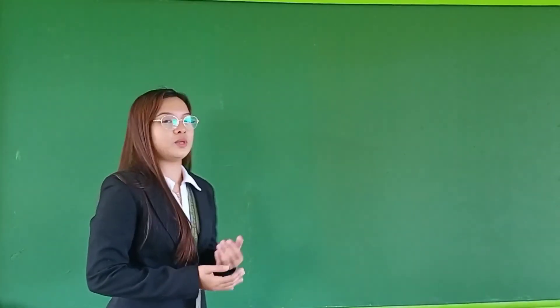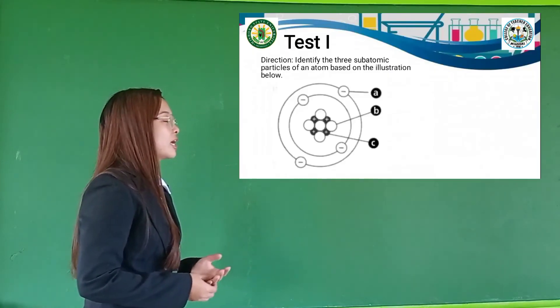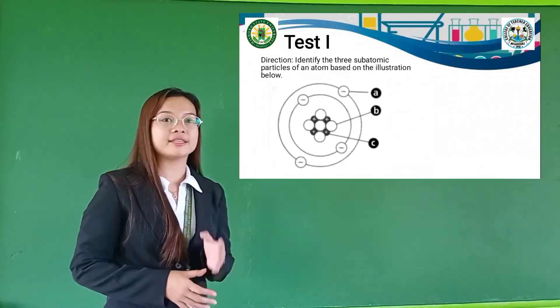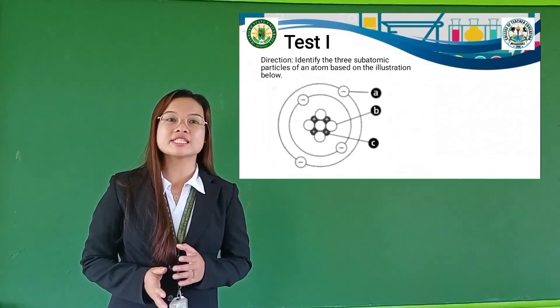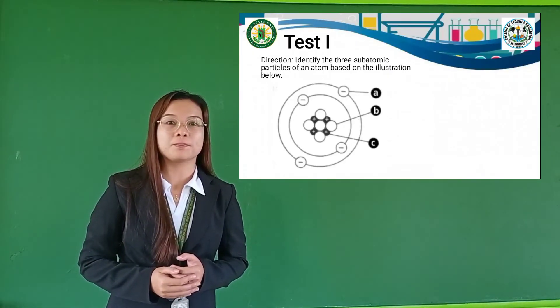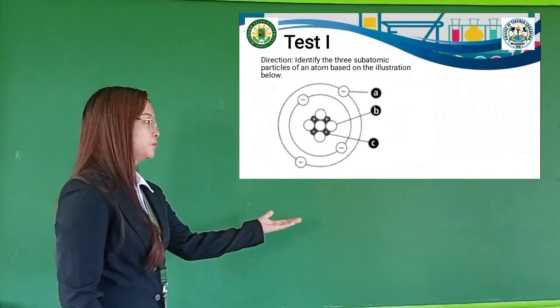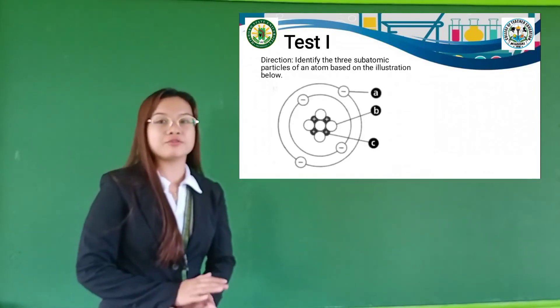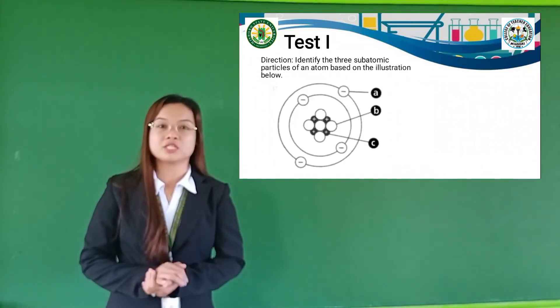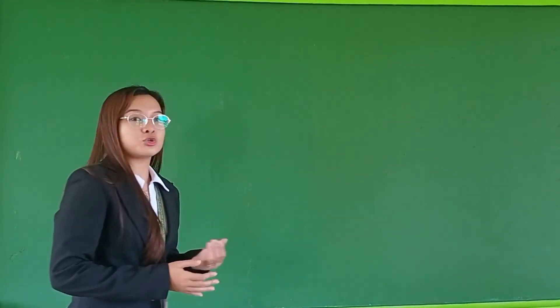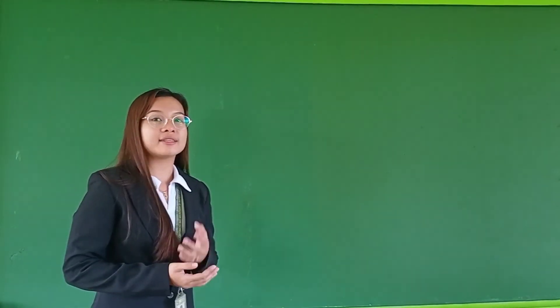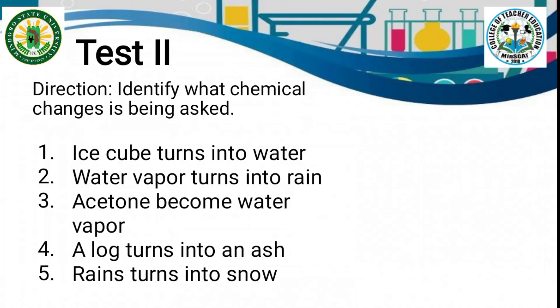This time, let's proceed to our quiz. For Test 1, direction: identify the 3 subatomic particles of an atom based on the illustration below. I will give you 5 minutes to finish Test 1. Next, Test 2, direction: identify what chemical change is being shown.